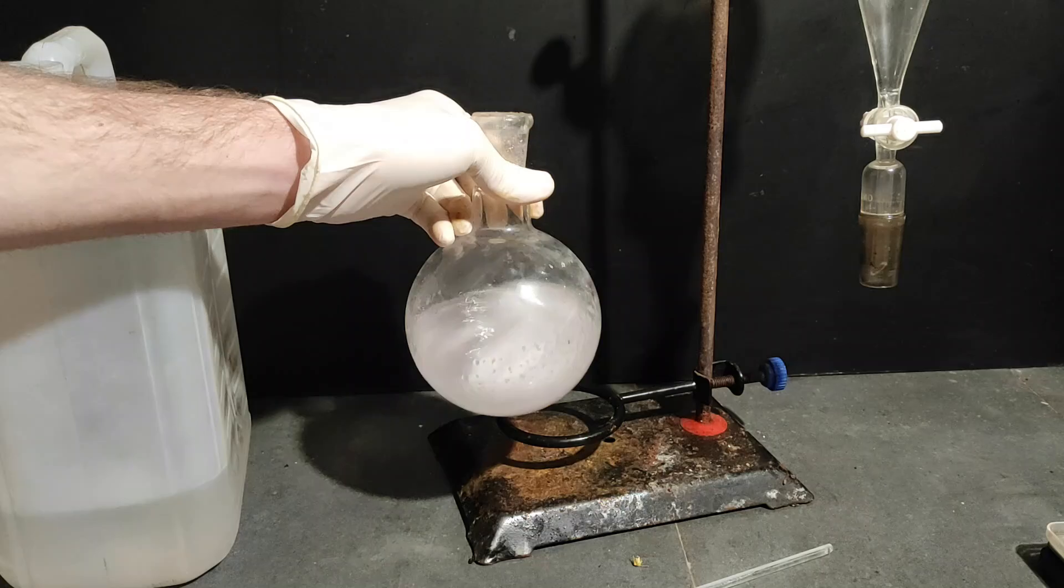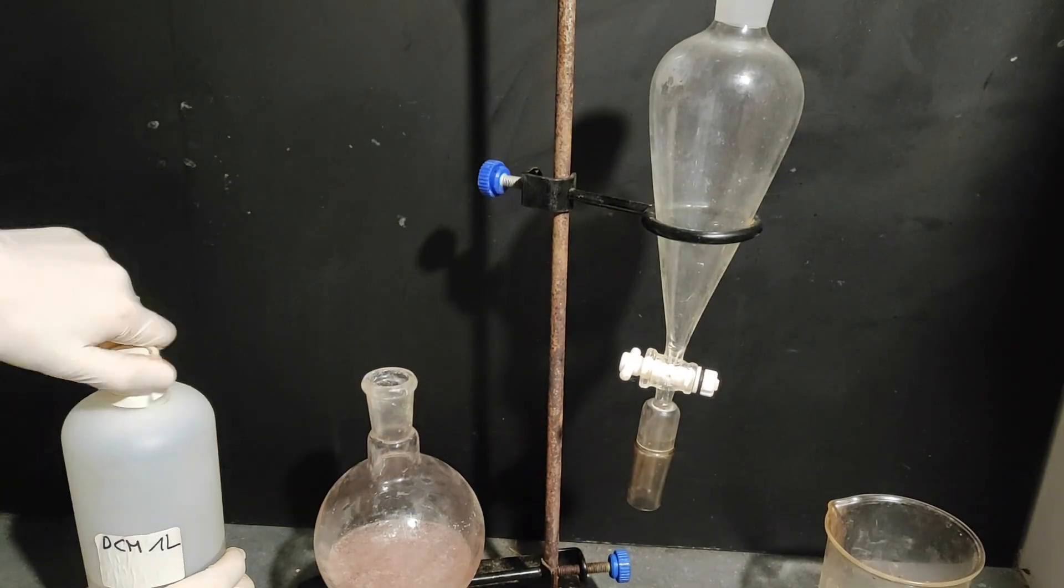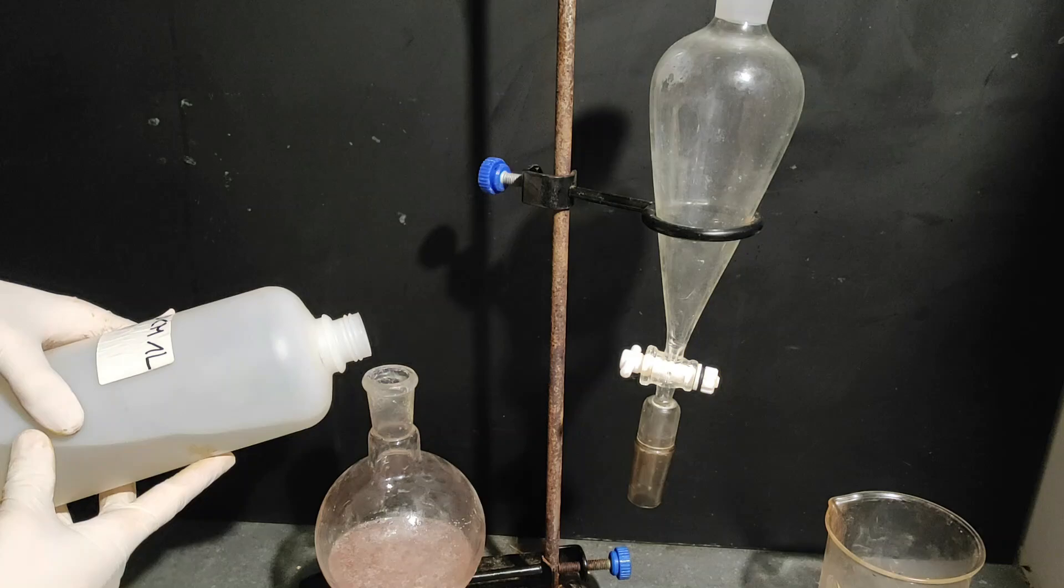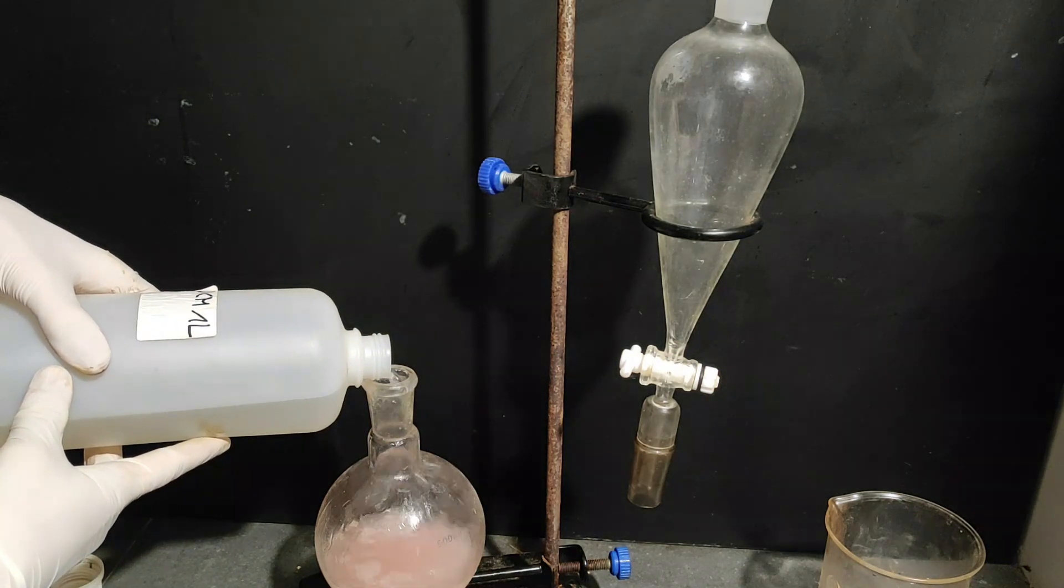Now after some time most of the acid should be neutralized and we should add a solvent called diethyl ether but I don't have any at all so instead I added what is called dichloromethane and transferred everything into this separation funnel.